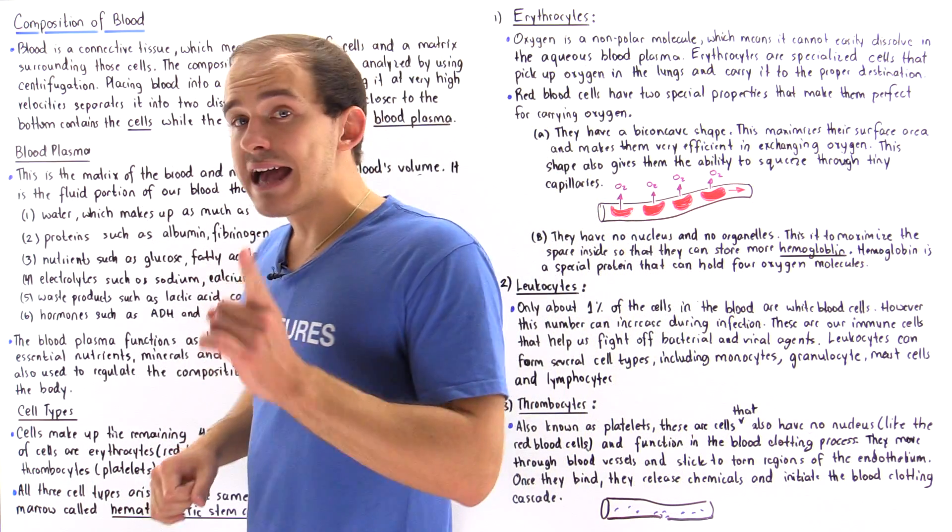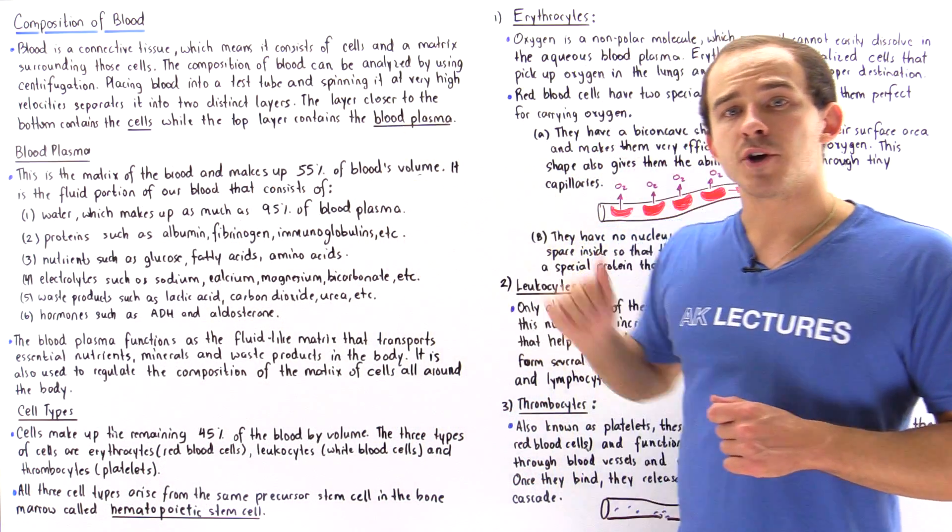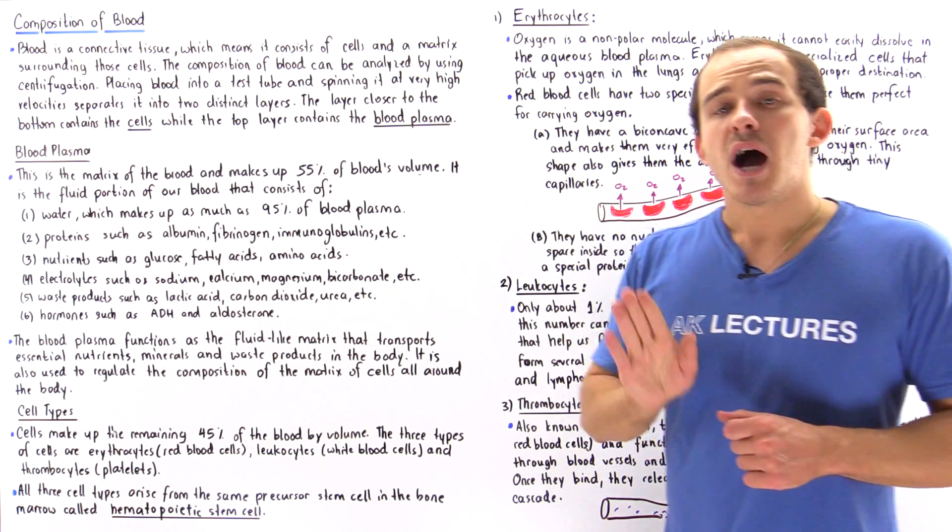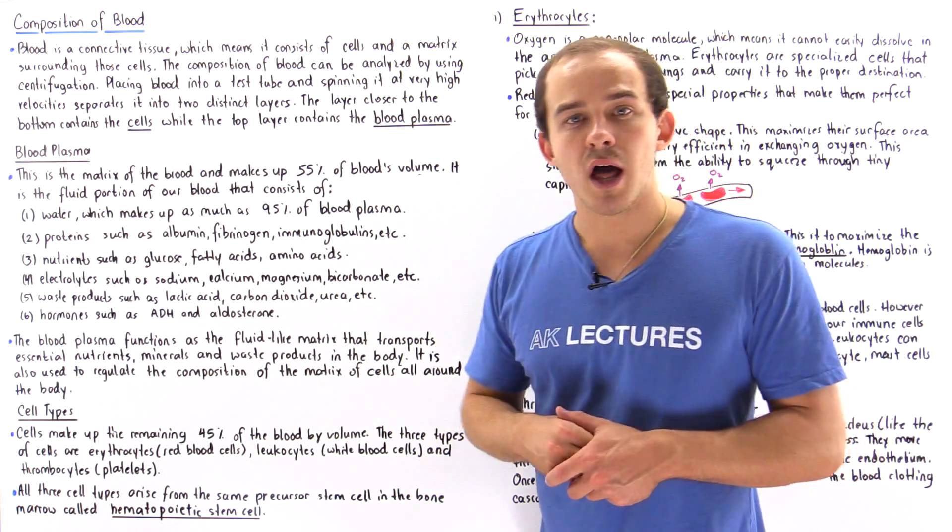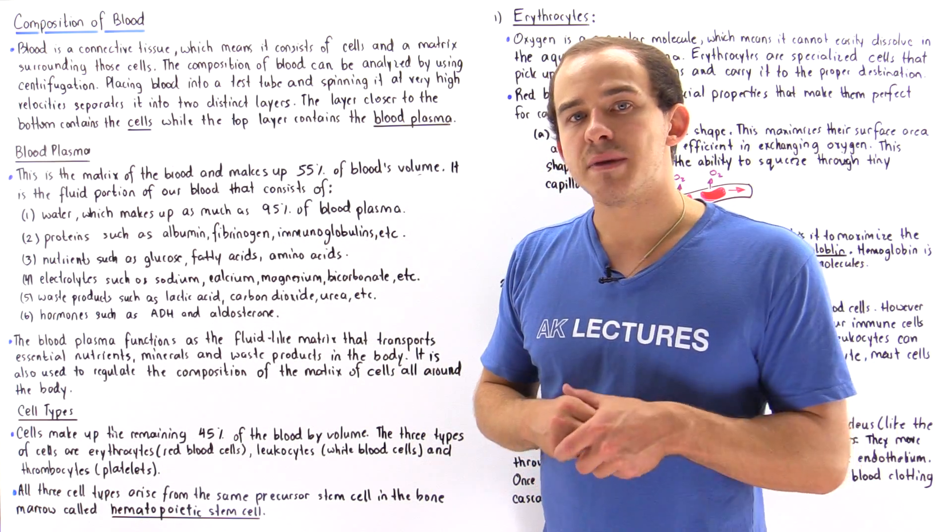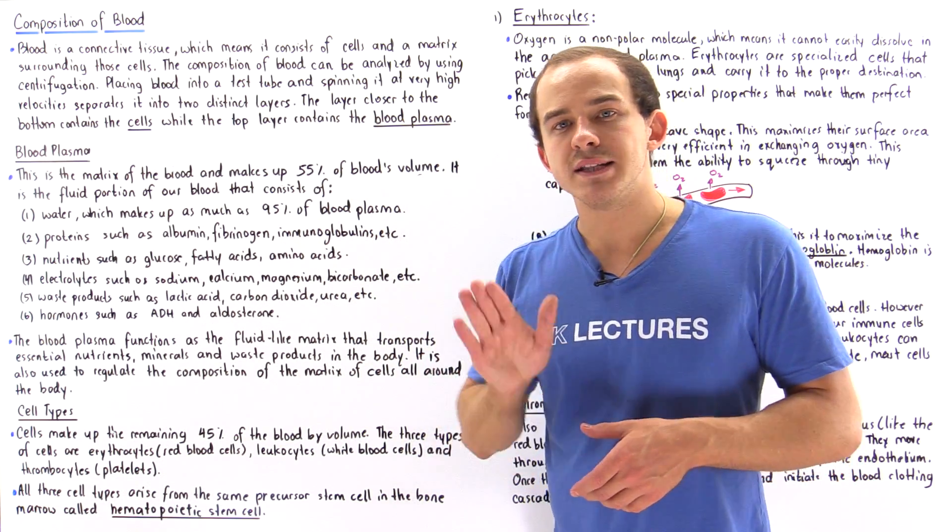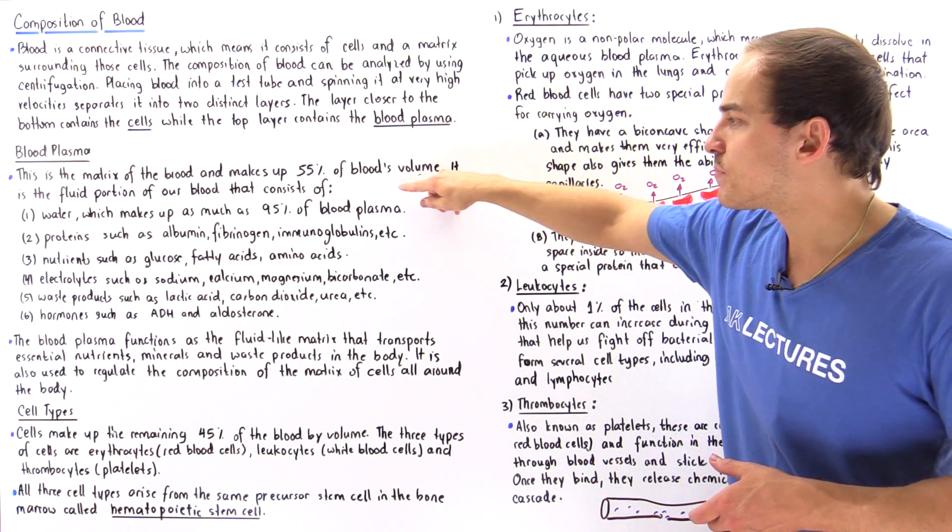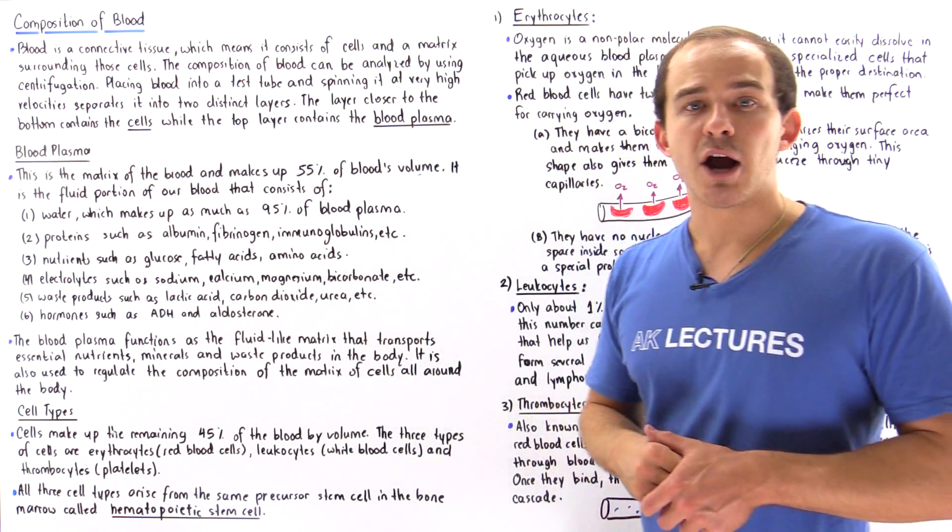Now blood plasma is actually the extracellular matrix that we spoke of earlier and it makes up about 55% of the volume of our blood. Now the blood plasma is a fluid-like substance that consists of many different things. So let's discuss some of the things that we normally find inside our blood.